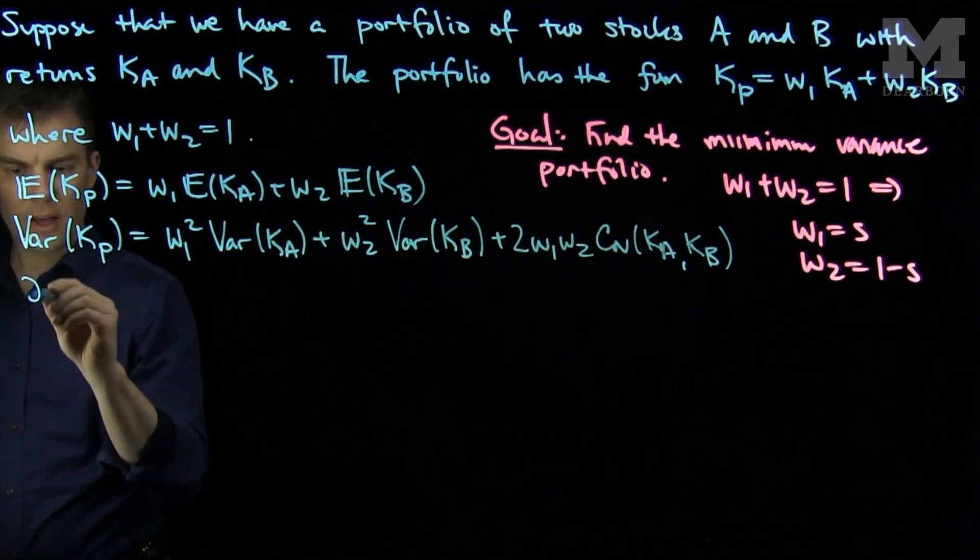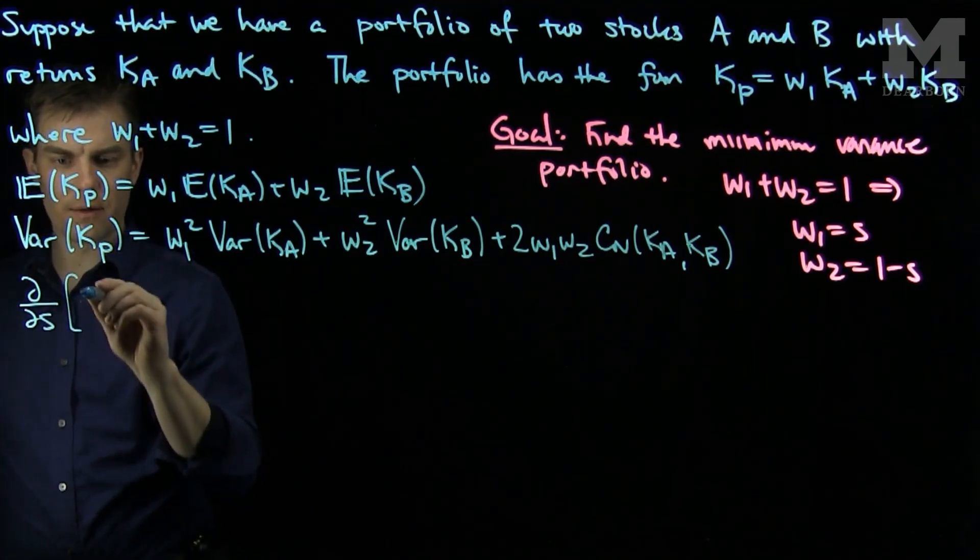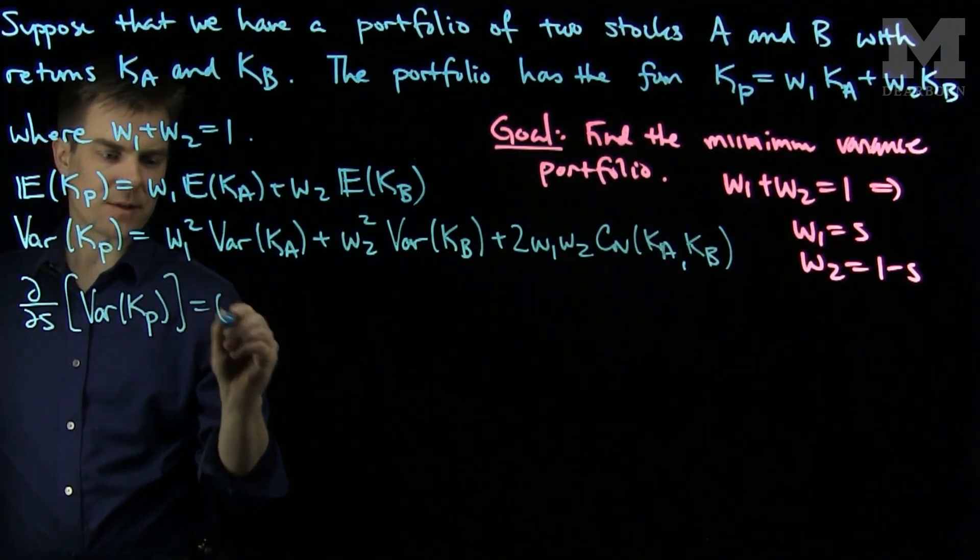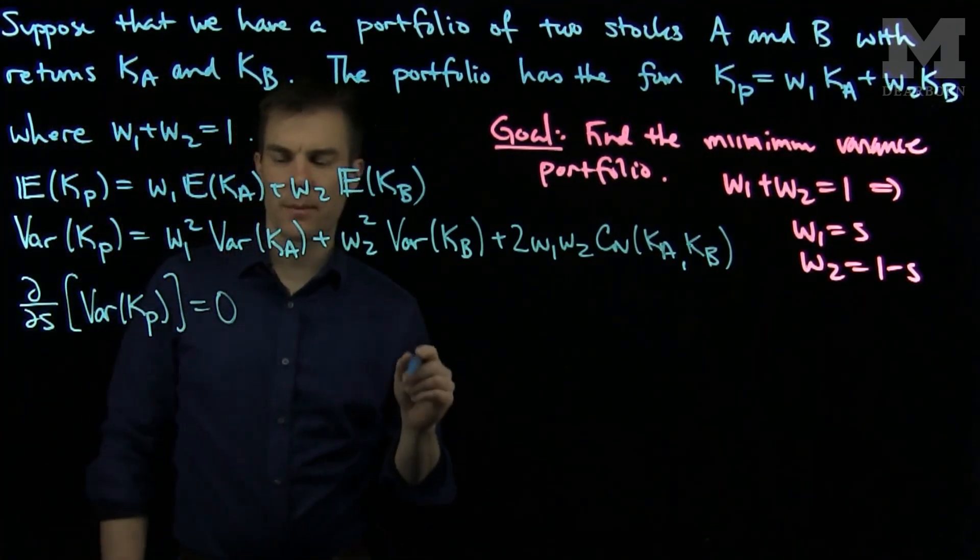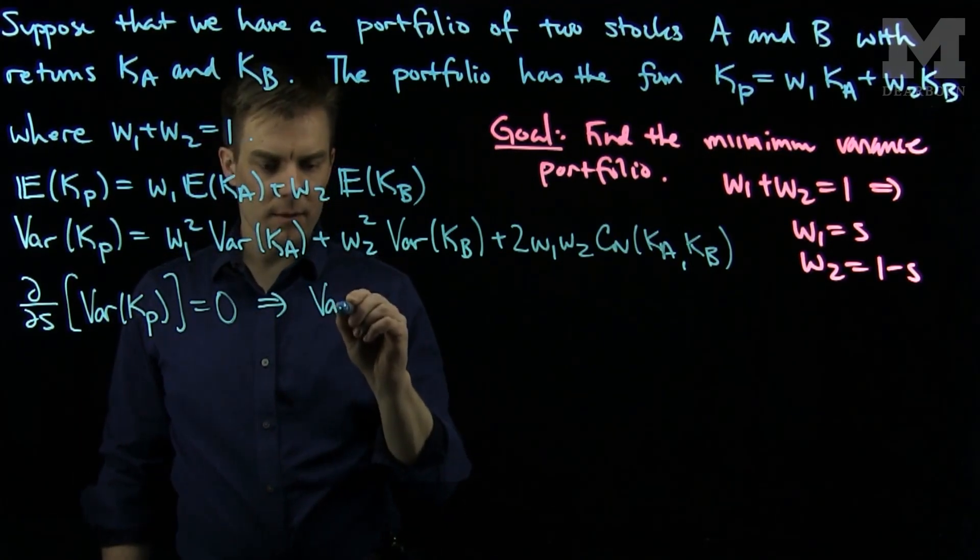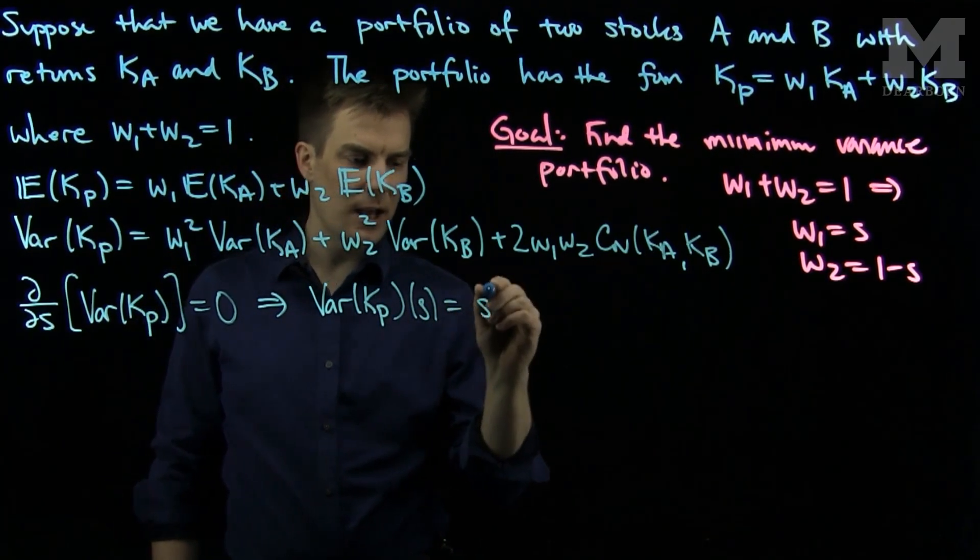So if we take the partial derivative with respect to S of the variance of Kp and set this equal to 0, that will find the minimum value.